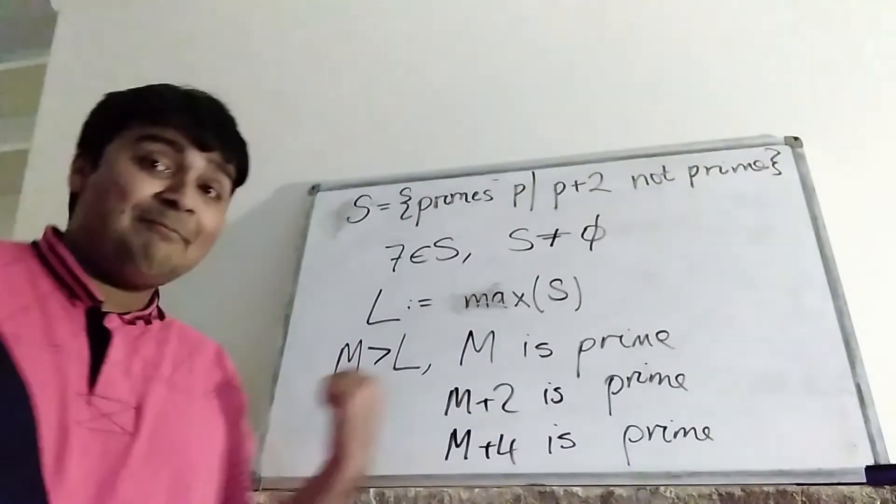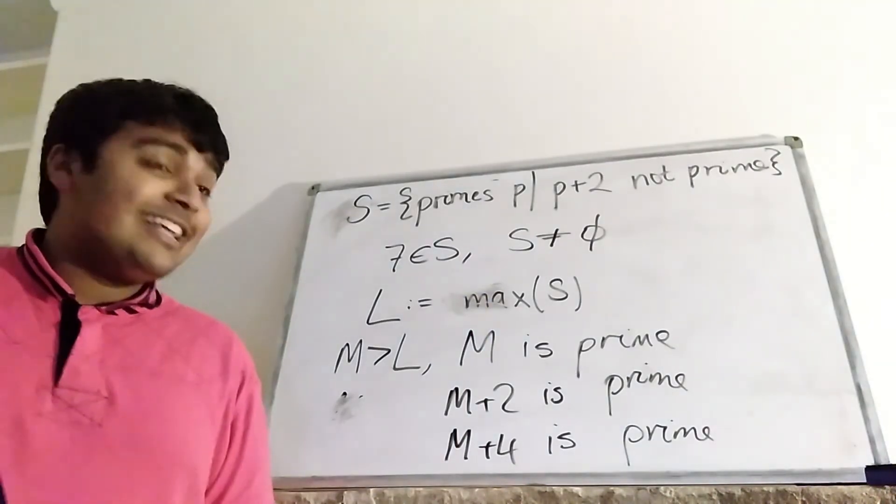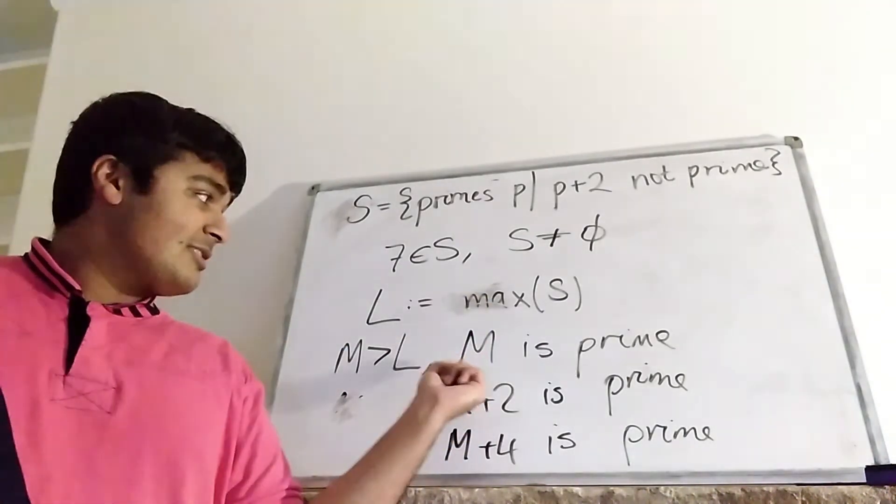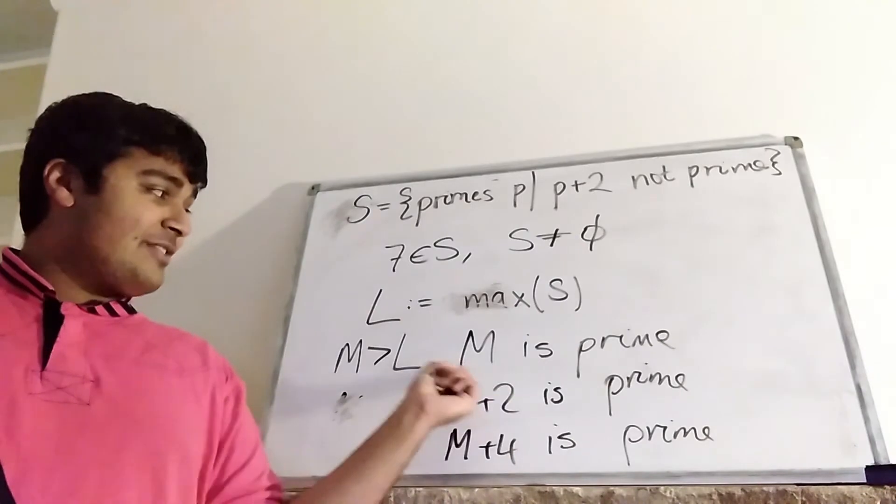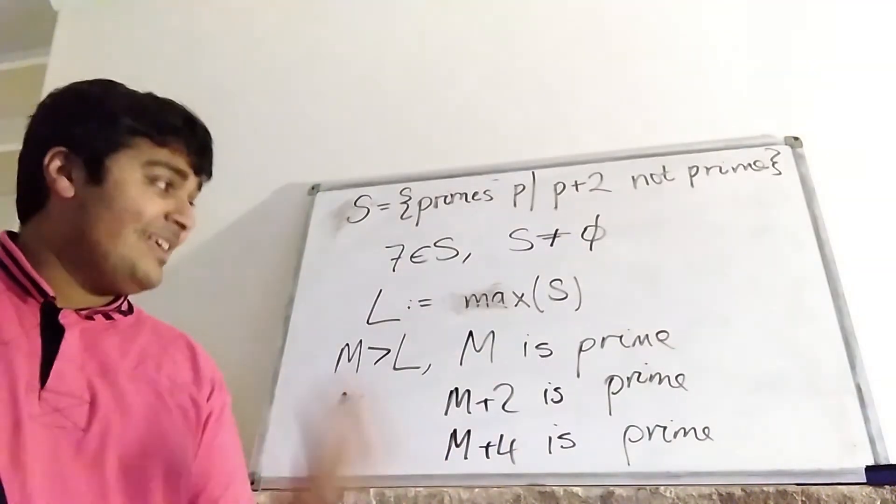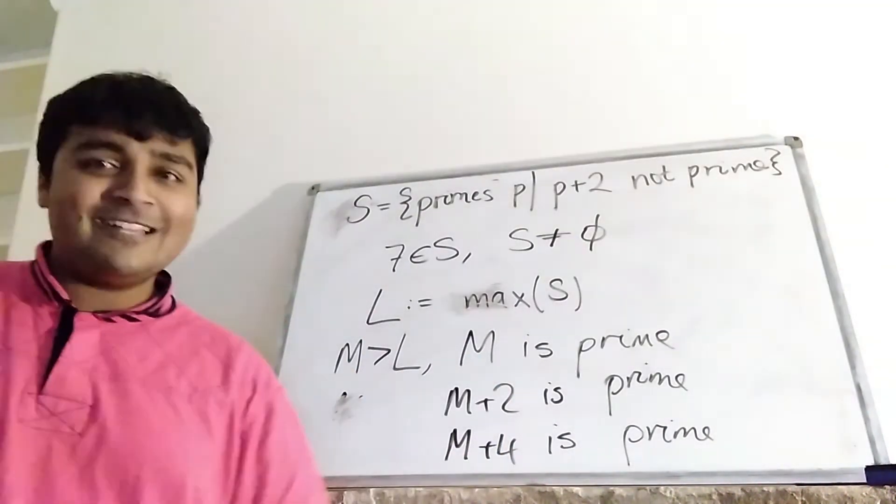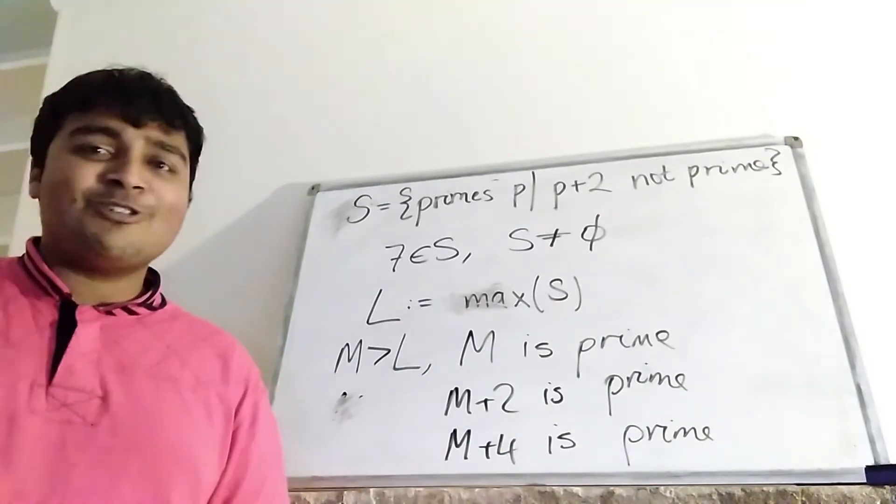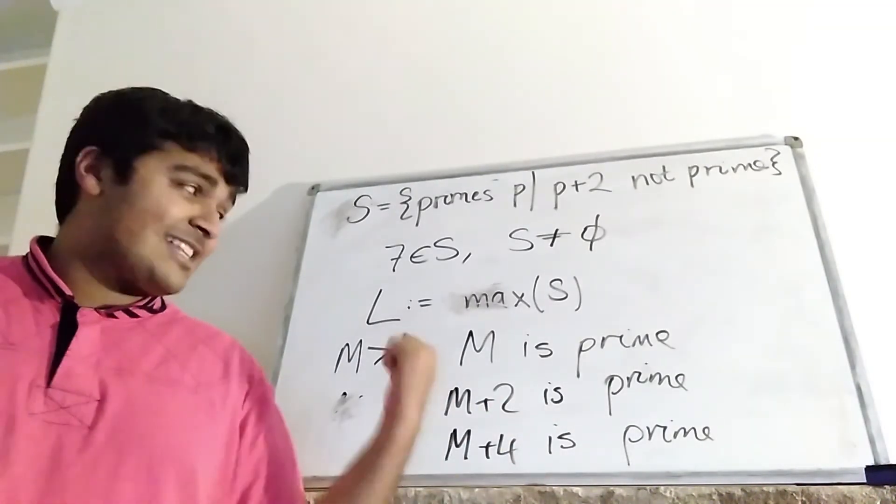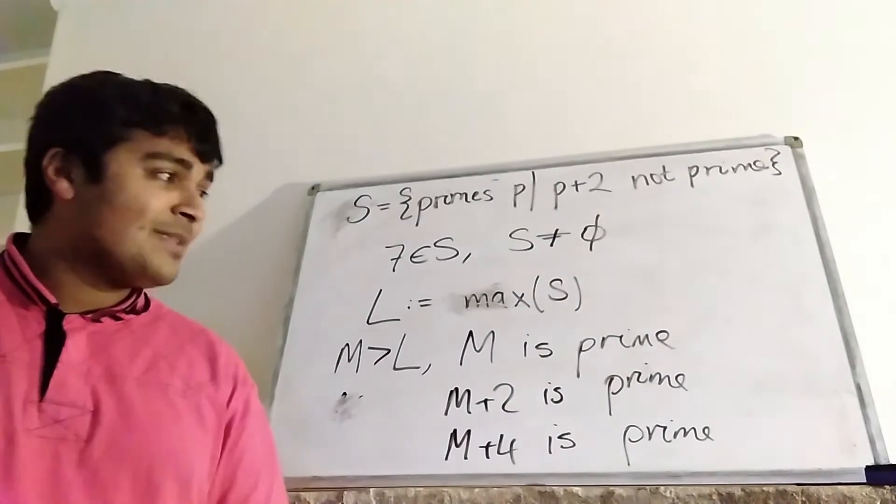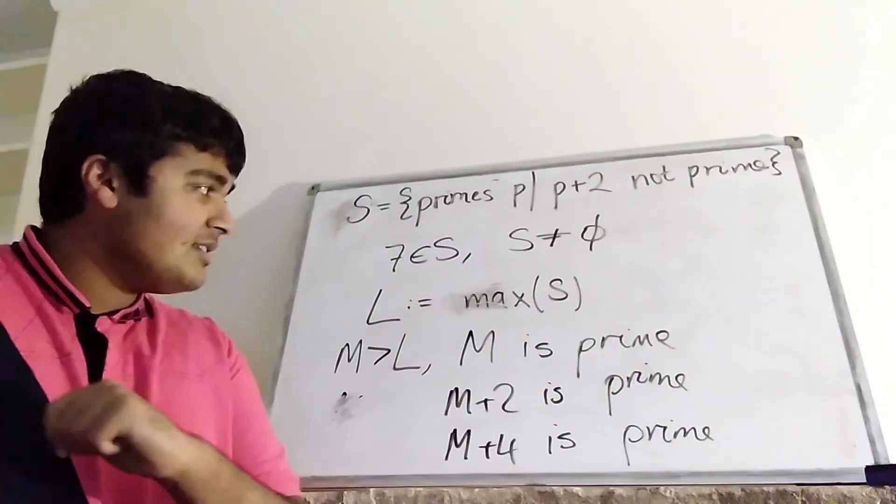And similarly, M plus 6, M plus 8, and so on. So M is an odd number, and every odd number bigger than or equal to M is prime, according to this. Now, firstly, this should be ringing alarm bells for a contradiction. Surely this can't be true, and it's not, but we've got to rigorously prove that. And that's not too difficult to do so, and that's why we're going to arrive at our contradiction.